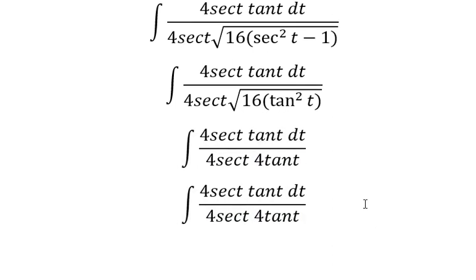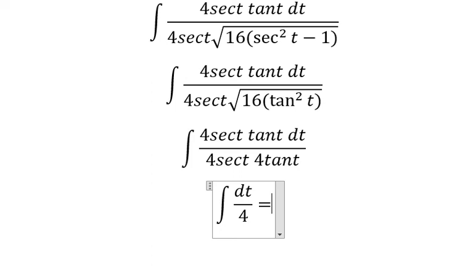And now we need to simplify 4 sec of t times tan on numerator and denominator. The integration of dt, we have t over 4.